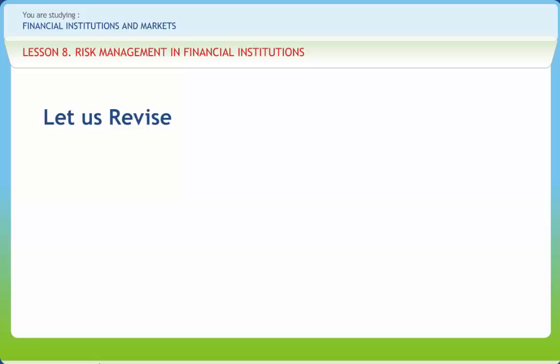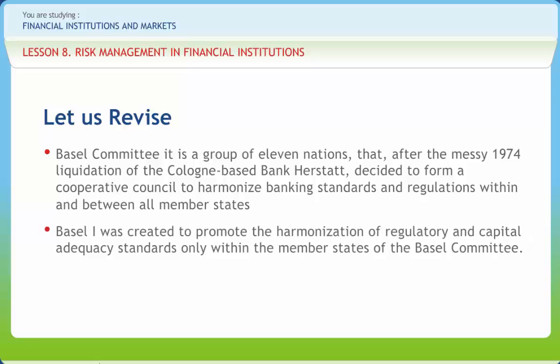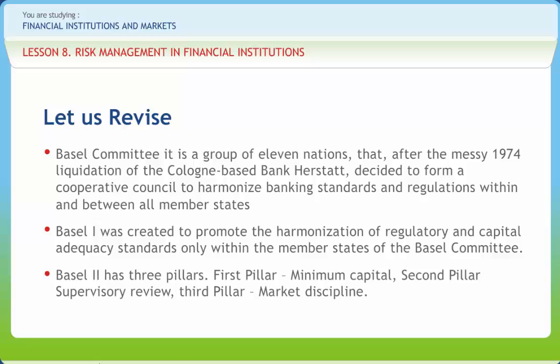Before we end, let us briefly revise what we have studied so far. The Basel Committee is a group of 11 nations that, after the messy 1974 liquidation of the Cologne-based bank Herstatt, decided to form a cooperative council to harmonize banking standards and regulations within and between all member states. Basel 1 was created to promote the harmonization of regulatory and capital adequacy standards only within the member states of the Basel Committee. The first internal ratings-based approach is known as the Foundation IRB. Basel 2 has three pillars: first pillar is minimum capital, second pillar is supervisory review, and third pillar is market discipline. In this approach, banks with the approval of regulators can develop probability of default models that provide in-house risk weightings for their loan books.